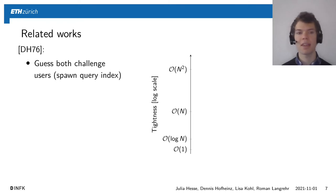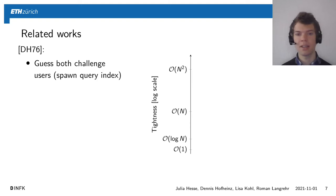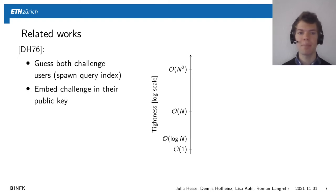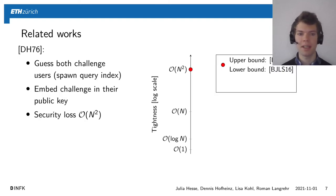An example of a NIKE that probably everybody knows is the Diffie-Hellman key exchange. When we want to analyze this NIKE in the multi-user setting, we have to guess both challenge users in advance — at least the index of the query when the adversary spawns these users — and then embed a challenge in their public key. This means we get a security loss of N².